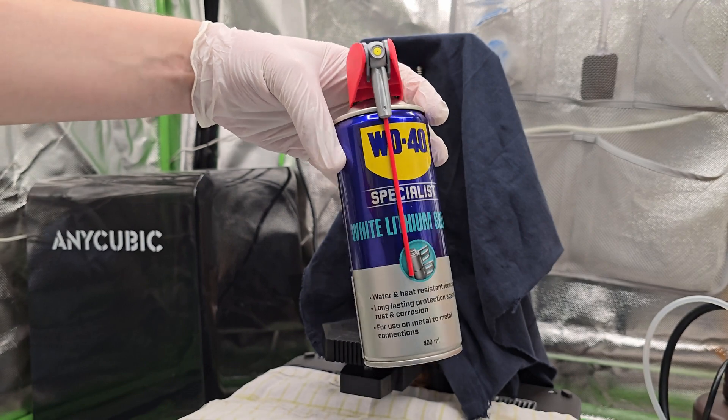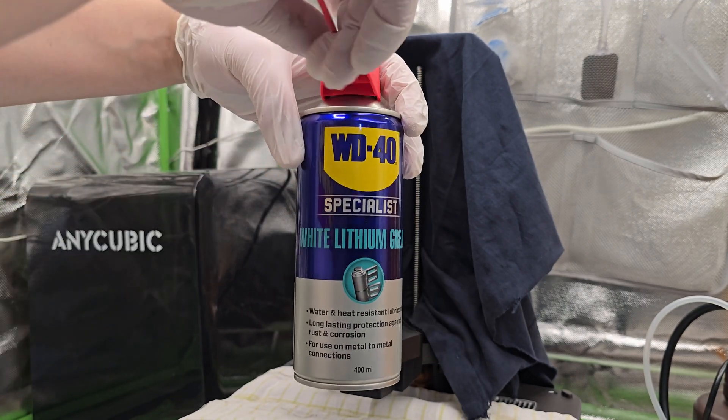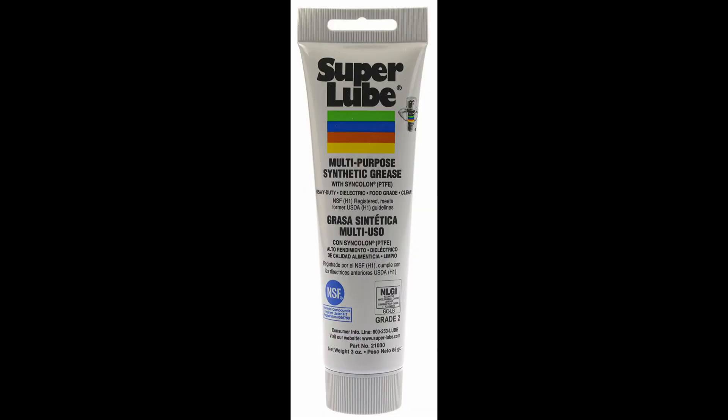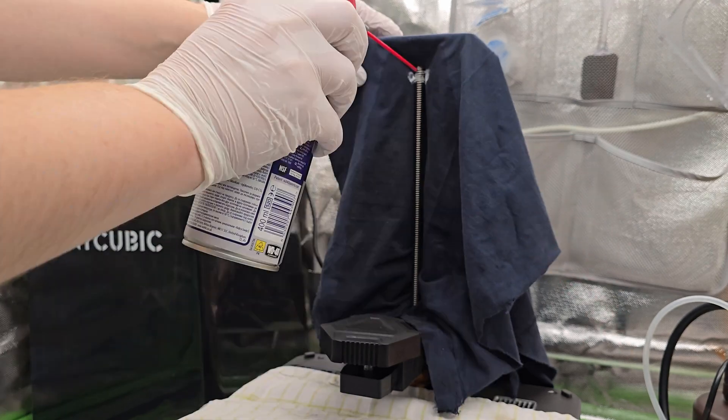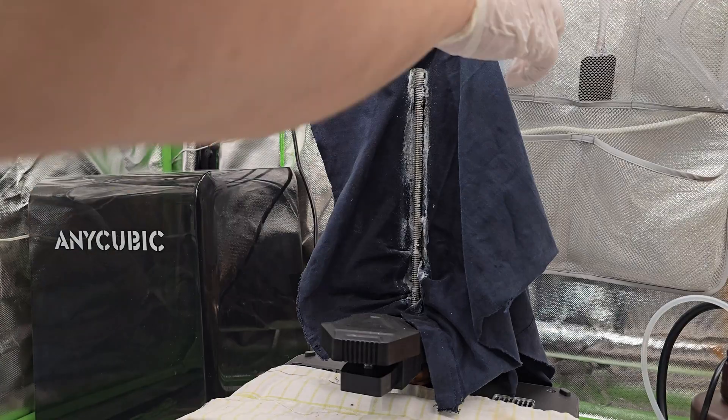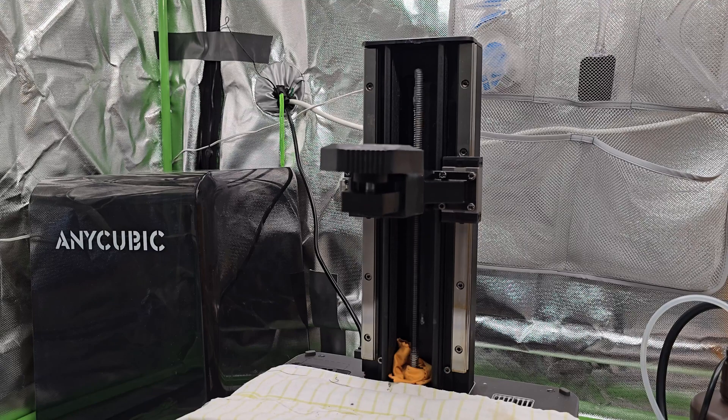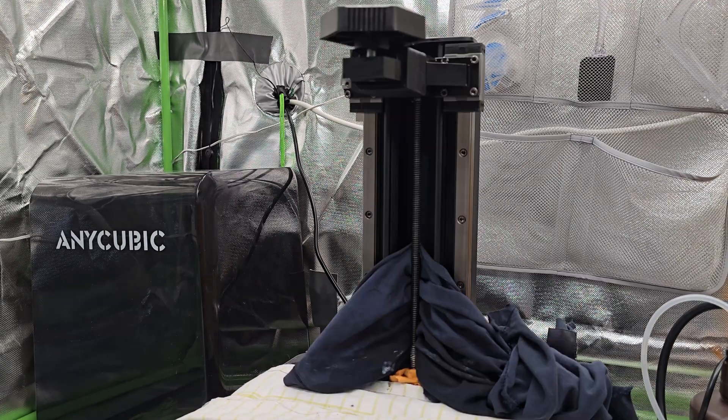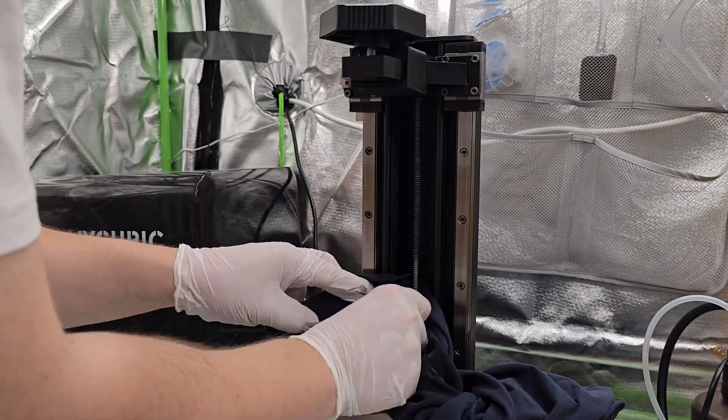Now for the greasing, I use white lithium grease from WD-40, but in case you can't find it, another really good option is SuperLube 21030 synthetic grease. Now spray the z-rod, remove the cloth behind it, and start moving z-axis up and down to help spread the grease evenly. Once that is done, raise the platform and repeat the same cleaning process on the lower section of the z-rod.